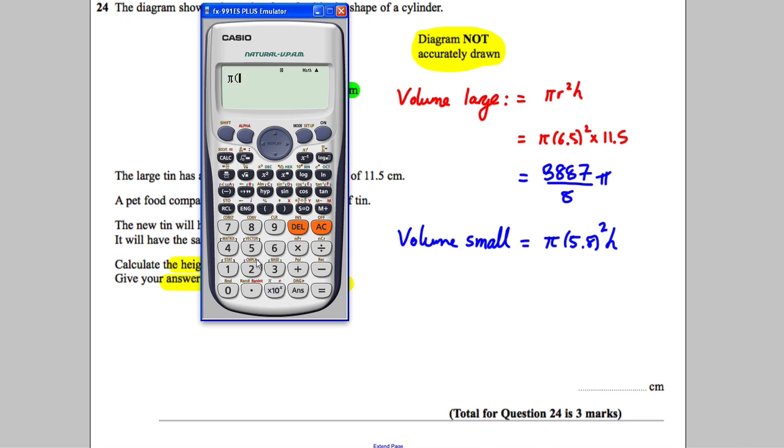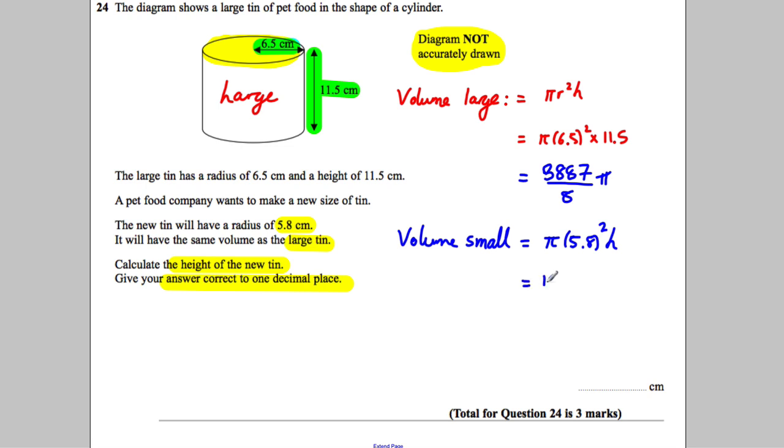So we can say π × 5.8². And we're going to get 841 over 25 π.